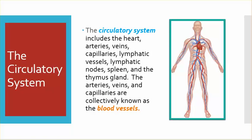The circulatory system includes the heart, arteries, veins, capillaries, lymphatic vessels, lymphatic nodes, spleen, and the thymus gland. The arteries, veins, and capillaries are collectively known as the blood vessels.